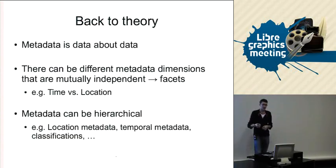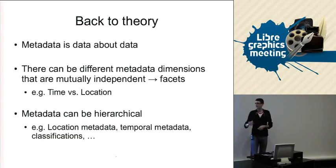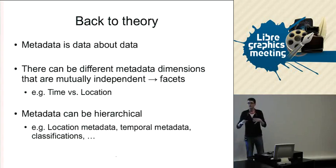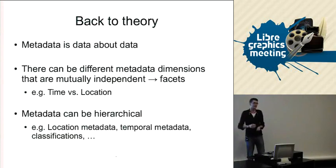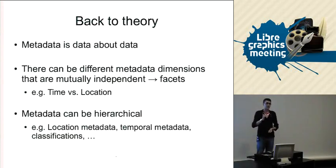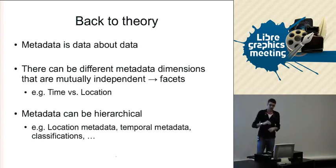Another attribute about metadata is that it can be hierarchical. For locations, you might have a country; inside a country you might have states; inside a state you have cities or municipalities — so it has a hierarchy associated. Same goes for temporal metadata. You start out with years — which year was a photo taken — then which month, and a month is a subset of a year, then which day, and so on.